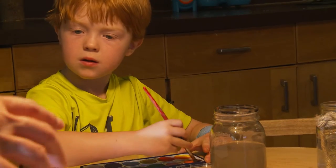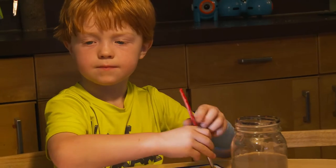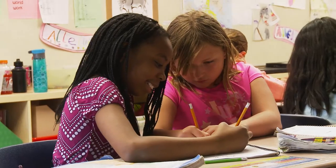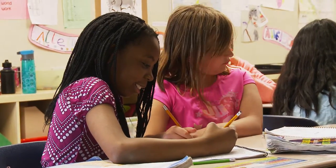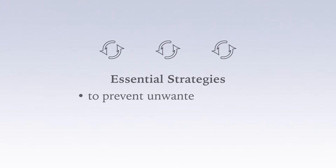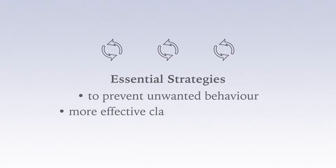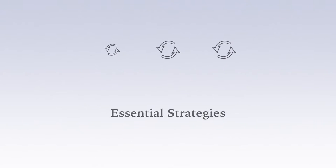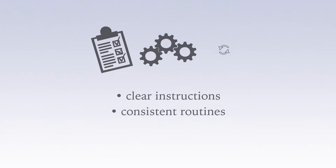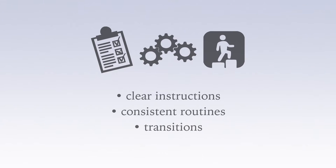People with specialized training in the area of positive behavior supports call this antecedent strategies. This video will highlight three essential strategies to prevent unwanted behavior and result in more effective classroom management: clear instructions, consistent routines, and transitions.